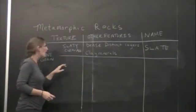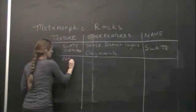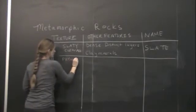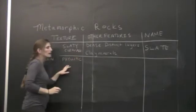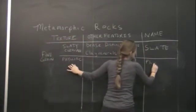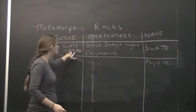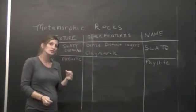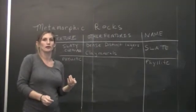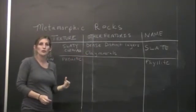The next fine-grained sample that we have often has a phylitic cleavage, and this is going to create the sample that's a phyllite. It kind of gives the name away. The difference between a slate and a phyllite is just the particle size has gotten a little bit larger. We still see some clay minerals, but we're also going to see the growth of mica.